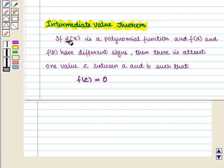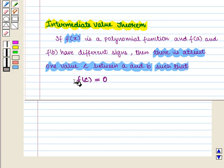if f(x) is a polynomial function and f(a) and f(b) have different signs, then there is at least one value c between a and b such that f(c) = 0. With this key idea, we shall move on to the solution.